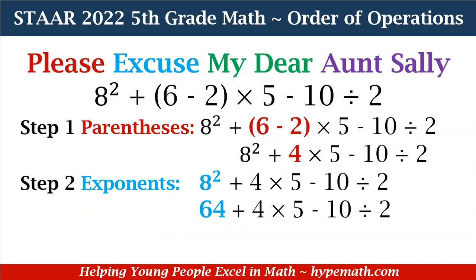Let's look at this expression that we need to solve. We can do it. Let's read the expression first. It's 8 squared plus 6, in parentheses 6 minus 2, times 5 minus 10 divided by 2. The first thing we are going to do is tackle that parentheses — 6 minus 2 is equal to 4.